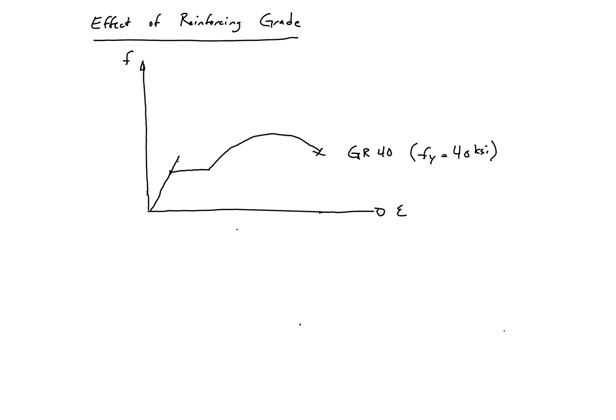So if we go up to grade 60, we're going to have a higher yield strength, we're going to have a shorter yield plateau, and we're going to have a little less ductility.